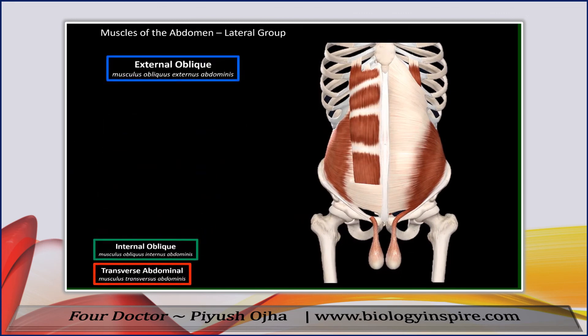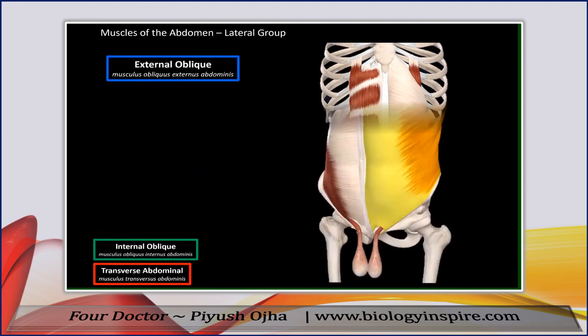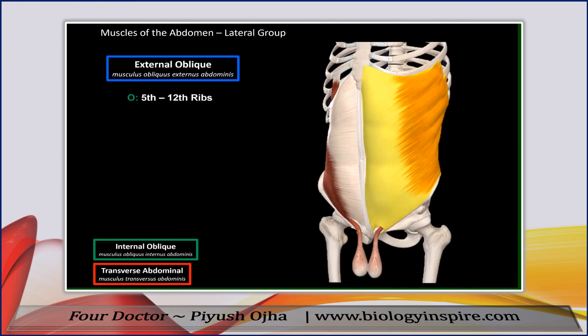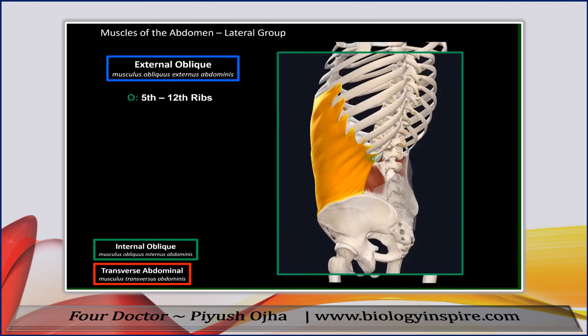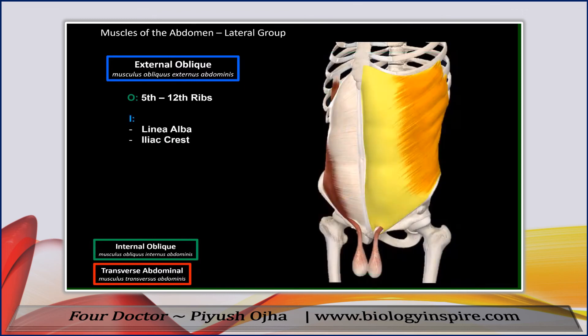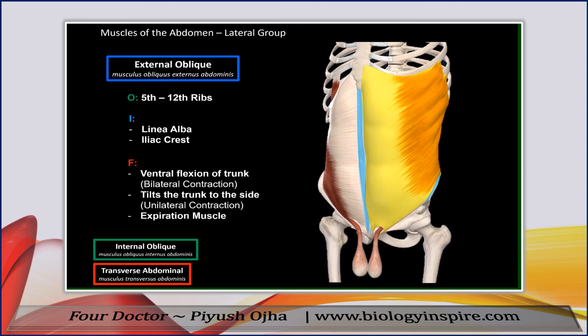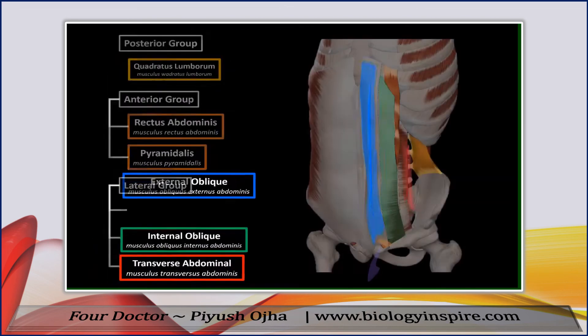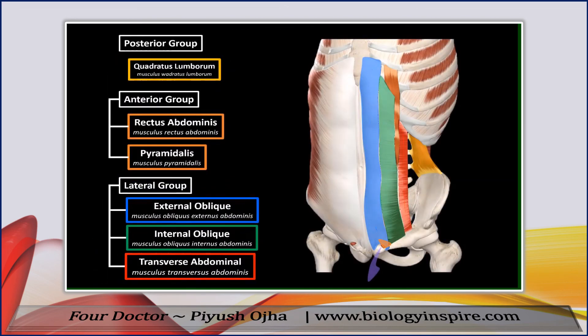The last muscle is the external oblique muscle. It originates from the 5th to the 12th rib and inserts at the linea alba as well as the iliac crest. Its function is that bilateral contraction causes ventral flexion of the trunk, and unilateral contraction tilts the trunk to the side. So that was all the muscles of the abdomen.